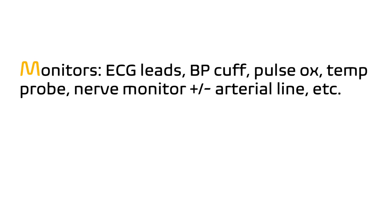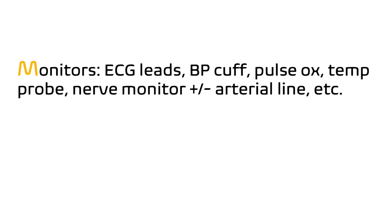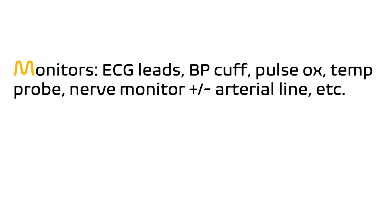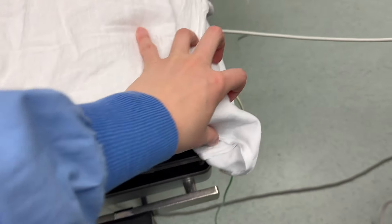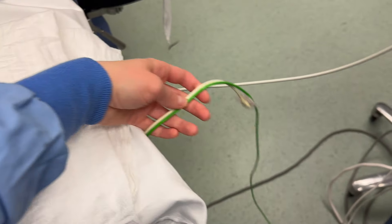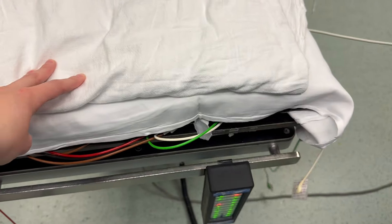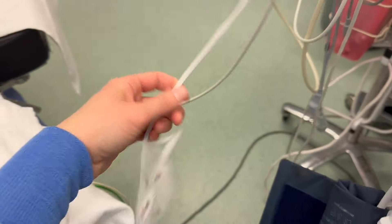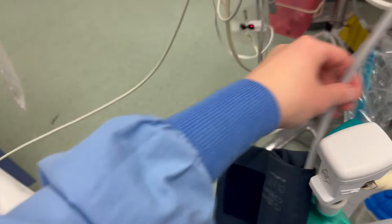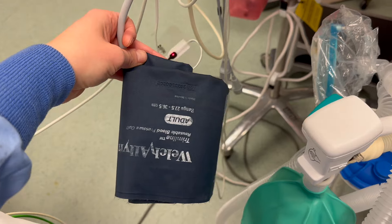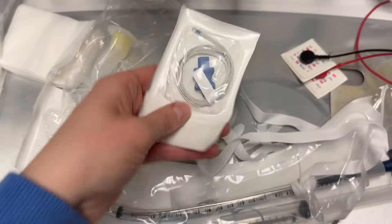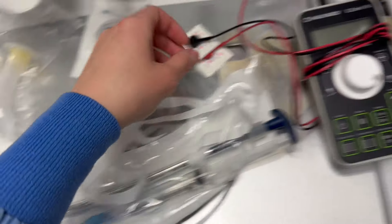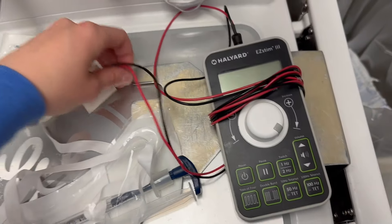The next step in setup is M, which stands for Monitors. This includes your ECG leads, blood pressure cuff, pulse oximeter, temperature probe, nerve monitor, plus or minus arterial line and other monitors. Here I have the ECG leads conveniently placed underneath the mattress and in prime position to attach to the patient. I have my pulse ox hanging nearby as well as my blood pressure cuff. I've chosen a nasal temperature probe for the case, and I have it here as well as my nerve monitor.